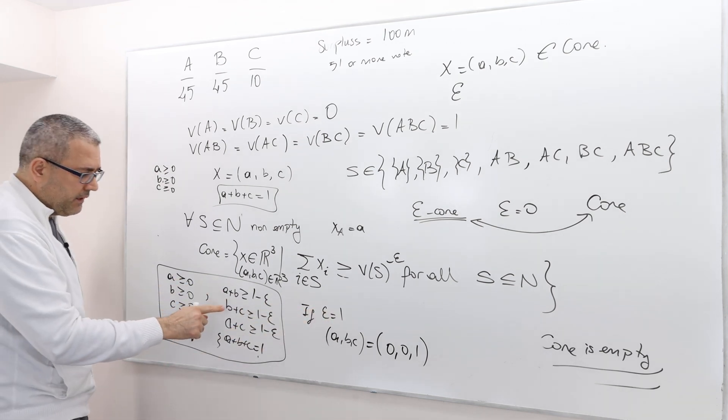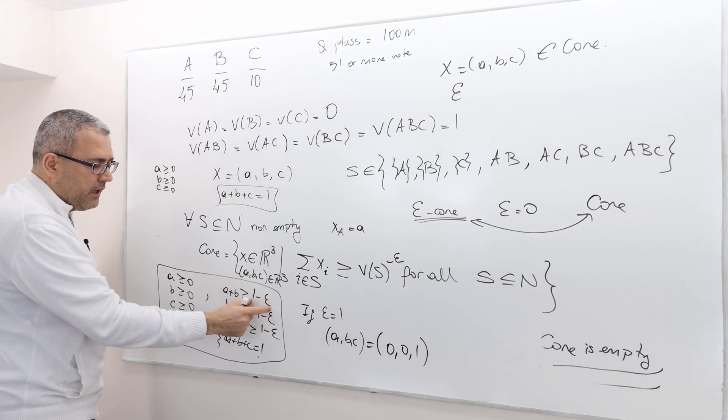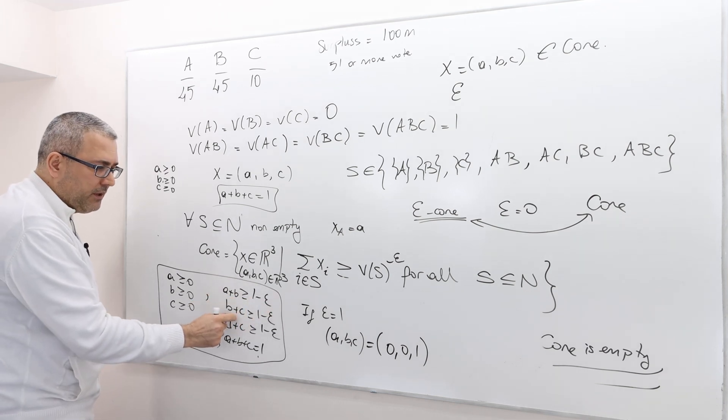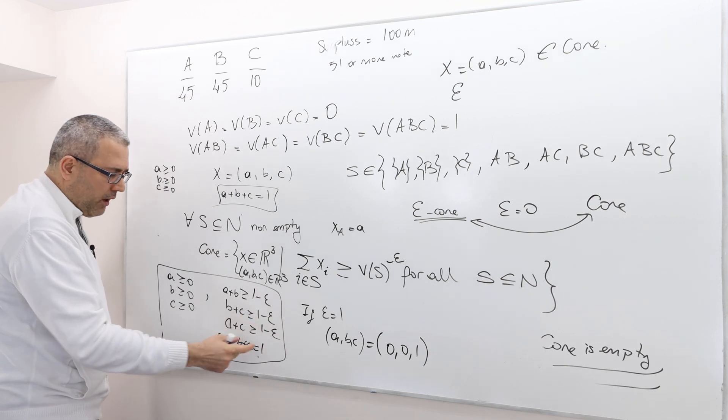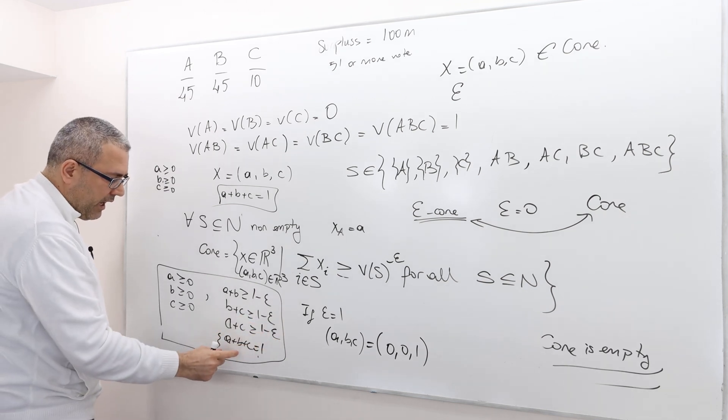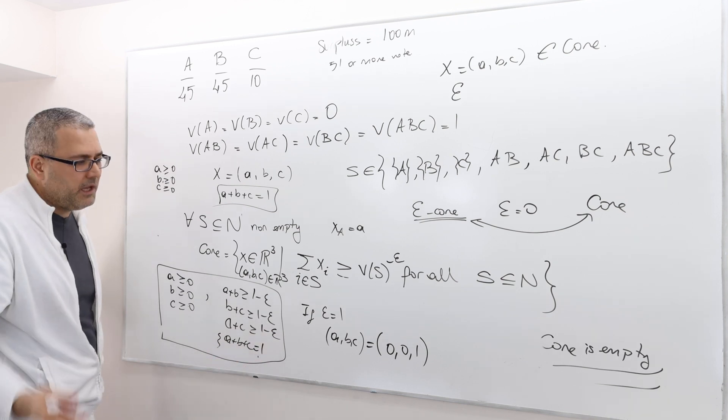Well, why is that? Well, because A plus B is 0, greater than or equal to 0. B plus C is 1, greater than 0. A plus C is 1, greater than 0. And A plus B plus C is equal to 1. Yep.